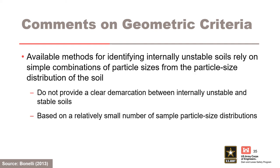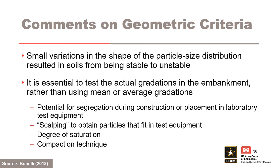Available methods for identifying internally unstable soils rely on simple combinations of particle sizes from the particle size distribution of the soil. They do not provide a clear demarcation between internally unstable and stable soils, and they are based on a relatively small number of sample particle size distributions. Small variations in the shape of the particle size distribution can affect whether or not a soil is stable or unstable. It is essential to test the actual gradations in the embankment rather than using mean or average gradations. Be aware of potential for segregation during construction, always avoid scalping large particles, and ensure proper degree of saturation and compaction technique.